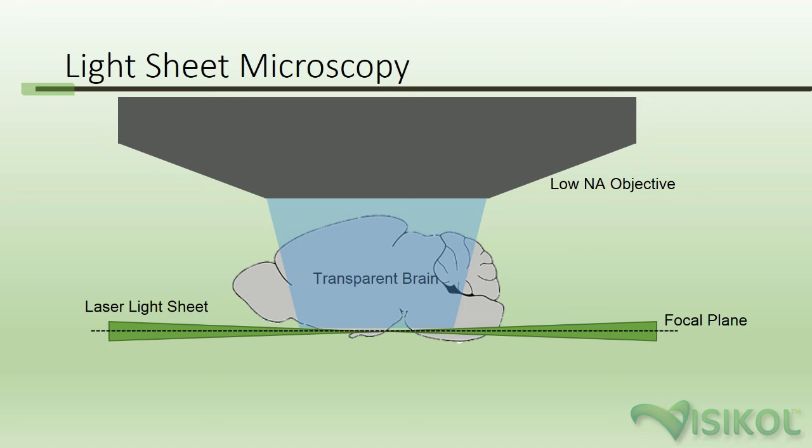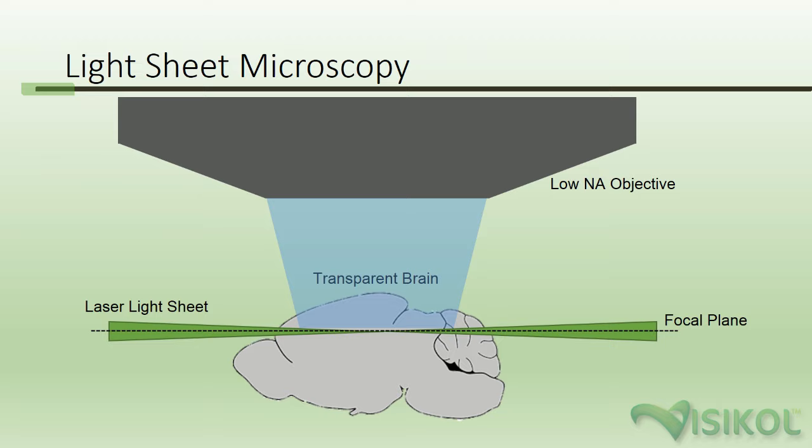Instead of illuminating an entire depth of the tissue, this approach only illuminates an ultra-thin sheet of the cleared and fluorescently labeled tissue that is in the same plane as the imaging objective's focal plane. Therefore, the objective only captures the emission of fluorophores in this thin light sheet. By then moving the sample through the light sheet and capturing images as the tissue is moved, a Z-stack of images can be acquired from the entire depth of the tissue.